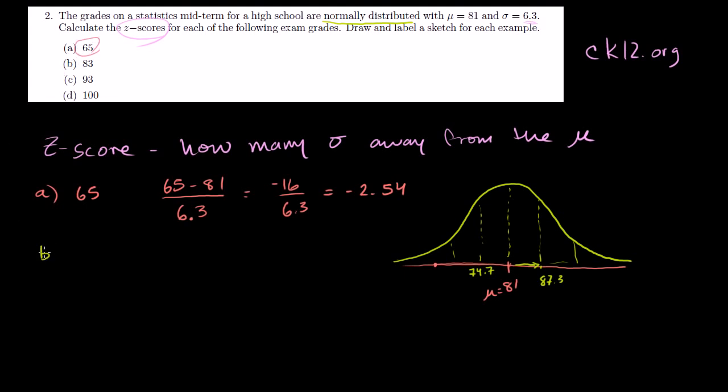Let's do all of them. 83. How far is it away from the mean? It's 83 minus 81, two grades above the mean. But we want it in terms of standard deviations. This was part A, 2.5 standard deviations below the mean.